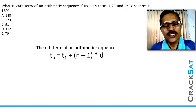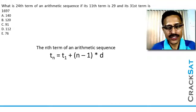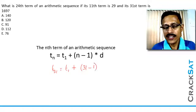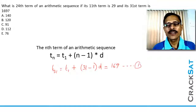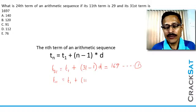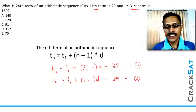We will start looking at how to solve this question. We will express both the 31st term and the 11th term in terms of the first term and the common difference. The 31st term T31 will be equal to T1 plus 31 minus 1 times the common difference, which according to the question equals 169. Let's call this equation 1. Now, the 11th term is equal to T1 plus 11 minus 1 times the common difference, which equals 29.